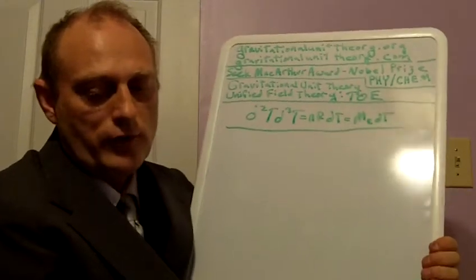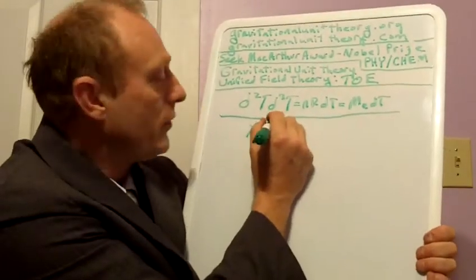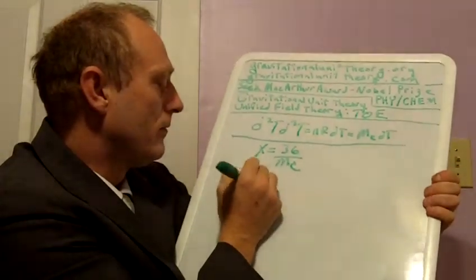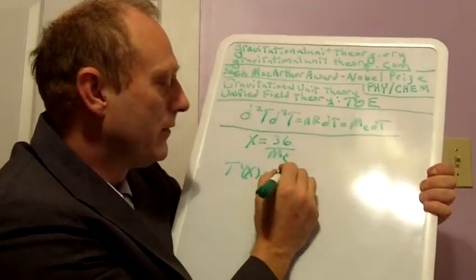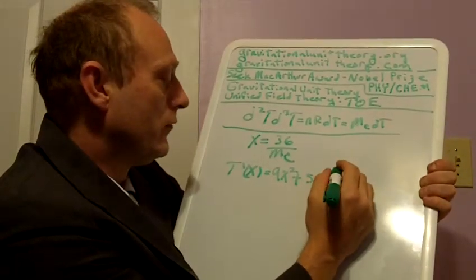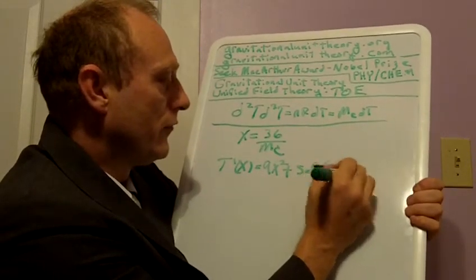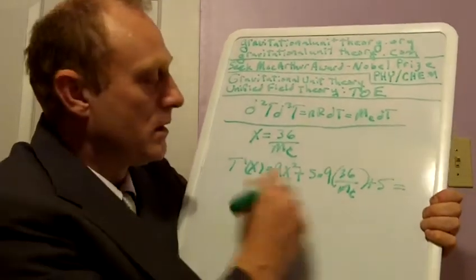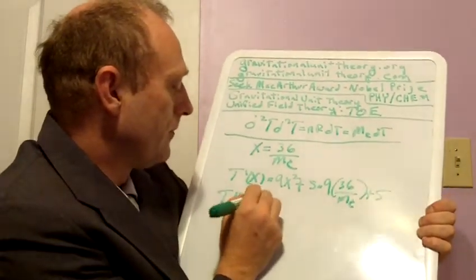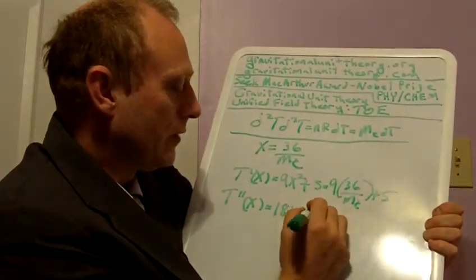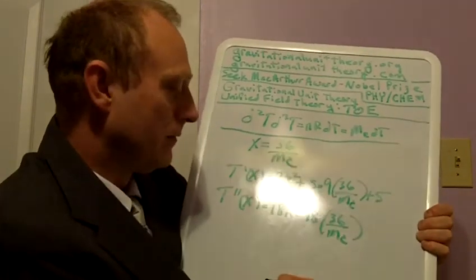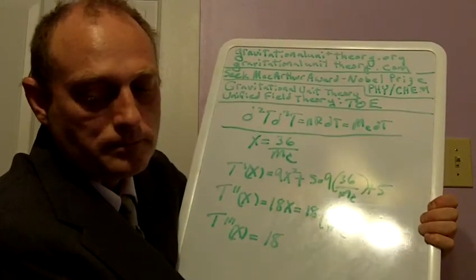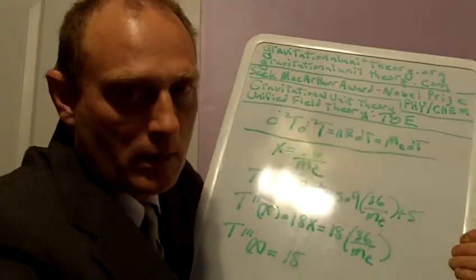In step two, what we do is we substitute x equal to 36 over the constant mass back into the derivatives. So t prime of x was 9x squared plus 5, which is equal to 9 times 36 over nc, squared, plus 5. T double prime of x is 18x, and this is equal to 18 times 36 over the constant mass. And then t triple prime of x was equal to 18. So that's step two.